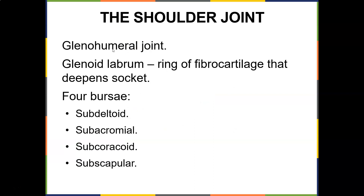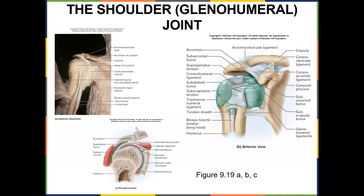The shoulder joint is the glenohumeral joint. It has a glenoid labrum — a ring of fibrocartilage that deepens the socket — and four bursa: subdeltoid, subacromial, subcoracoid, and subscapular. The subacromial bursa is the most commonly inflamed, which is why most shoulder pain is attributed to subacromial bursitis. If these bursa get inflamed there's very little room for error — there's a lot of impingement. Bad posture brings the shoulder forward, causing even more impingement.